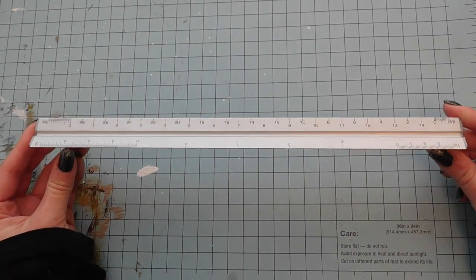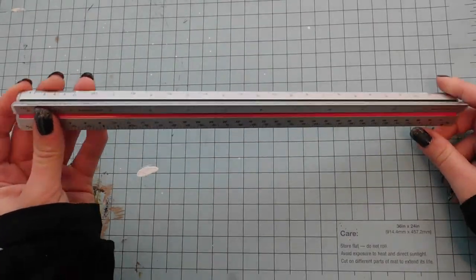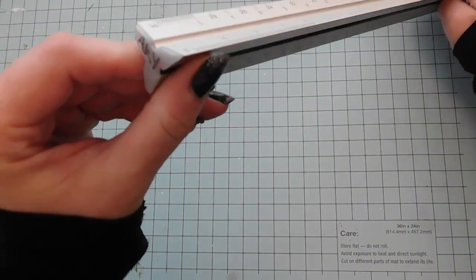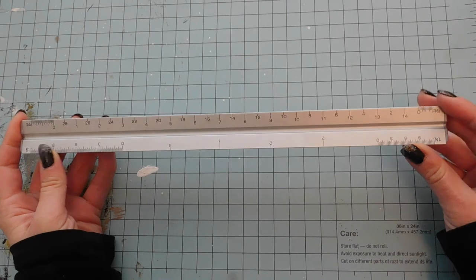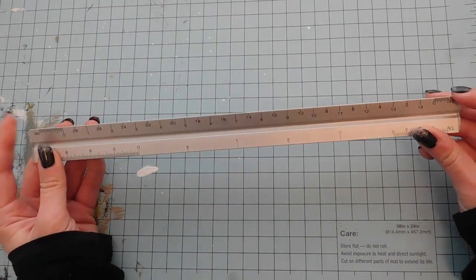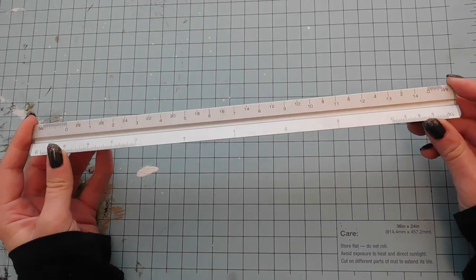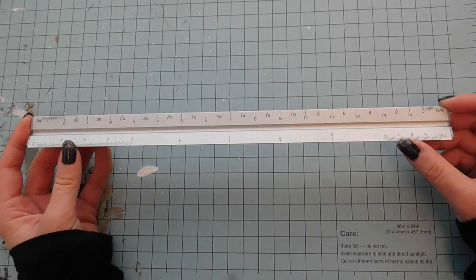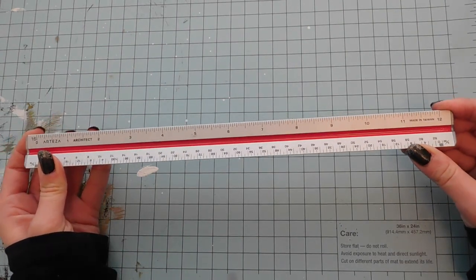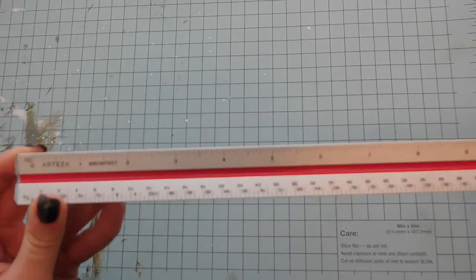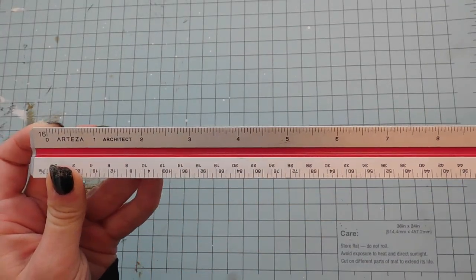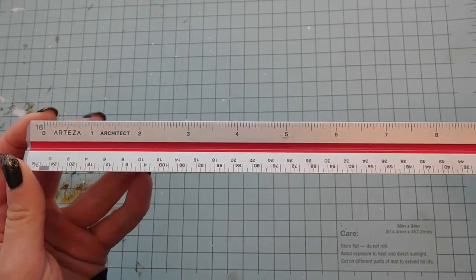It can look a little intimidating at first because we have a three-sided ruler here that has a bunch of different numbers. Five of the sides have two different scales on them, so we have to think about the overlapping scales and understand how to read it. But I believe that if you know how to read a regular ruler, like you see on this side of the scale ruler, you can figure out how to read a scale ruler. It's pretty simple.